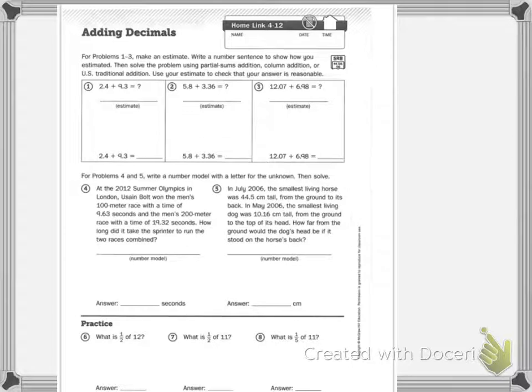So, my estimate, 2.4, I'm going to do 2.0 because 4 I round down, plus 9.0, round down, my answer is 11.